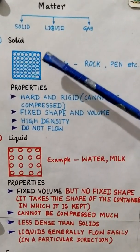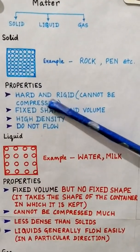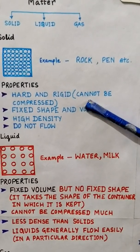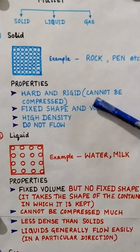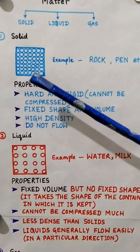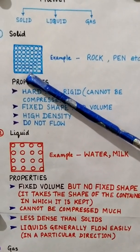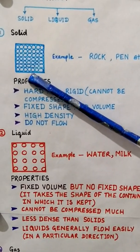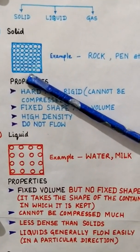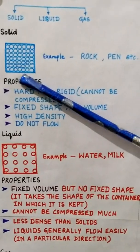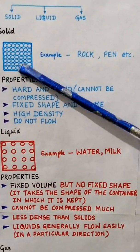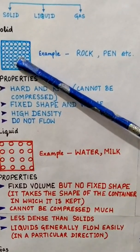The first property of solid is that it is hard and it cannot be compressed. As you can see in the diagram, between the particles there is no space. So definitely if there is no space between the particles, it will not be able to be compressed and so it is hard.